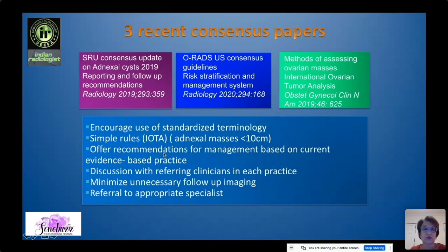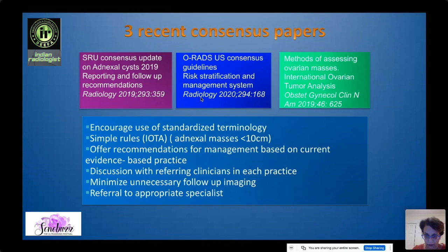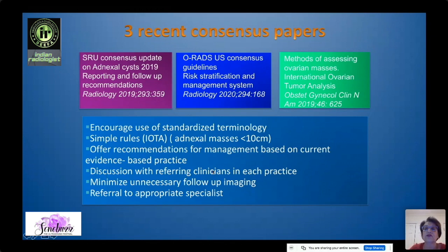These are the simple rules from IOTA, the International Ovarian Tumor Analysis. The SRU focuses more on adnexal cysts in their more recent paper. And then there is ORADS from the American College of Radiology, which is a comprehensive management strategy to classify risk of an ovarian or adnexal mass being malignant. I would encourage everybody to adopt at least some of them to make reporting uniform throughout your practice, as they allow you to offer recommendations for management based on current evidence-based practice, minimize unnecessary follow-up imaging, and facilitate referral to the appropriate specialist.